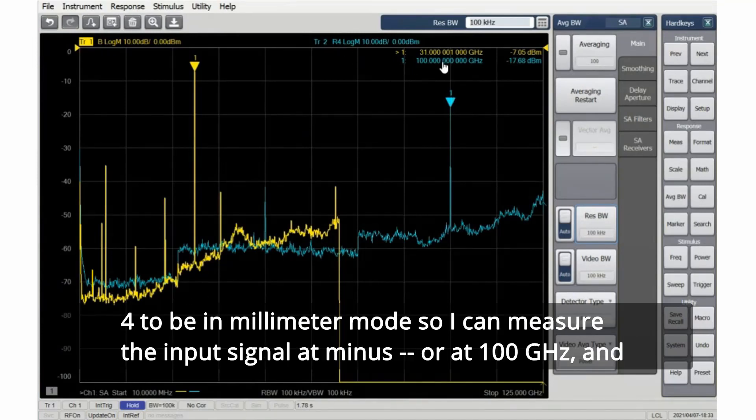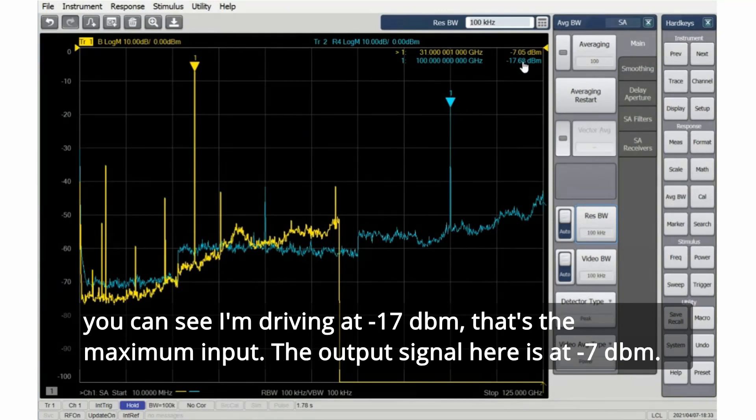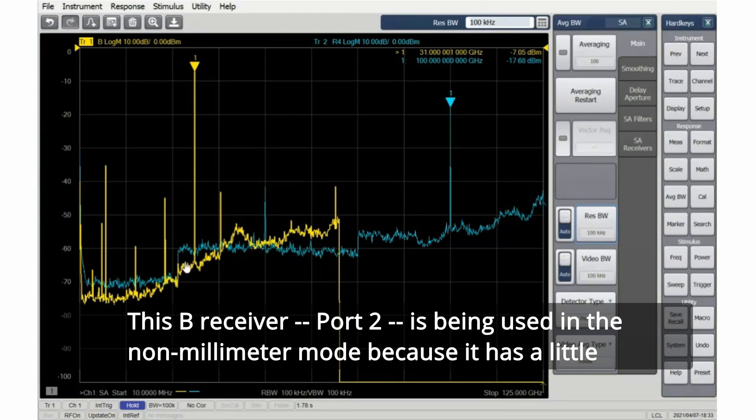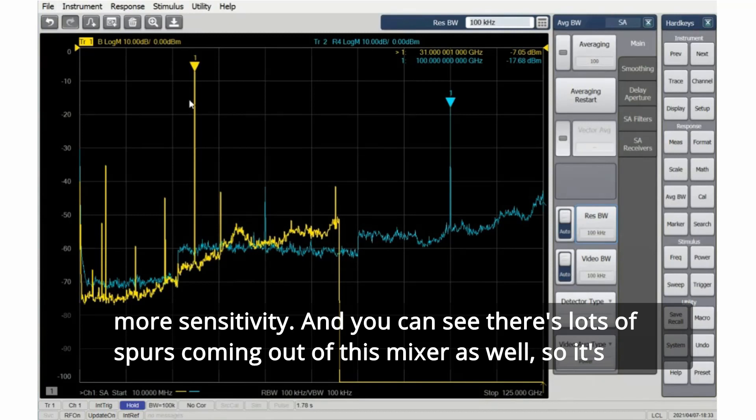You can see I'm driving at minus 17 dBm - that's the maximum input. The output signal here is at minus 7 dBm. This receiver port 2 is being used in the non-millimeter mode. It has a little more sensitivity, and you can see there's lots of spurs coming out of this mixer as well, so it's not completely spur free.